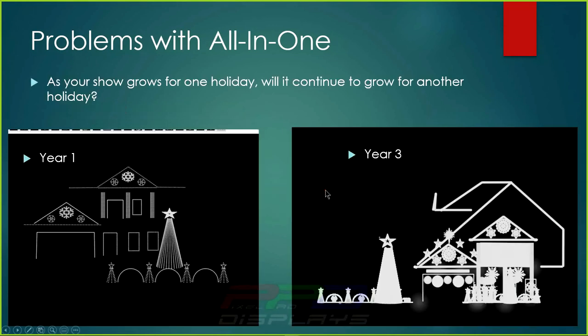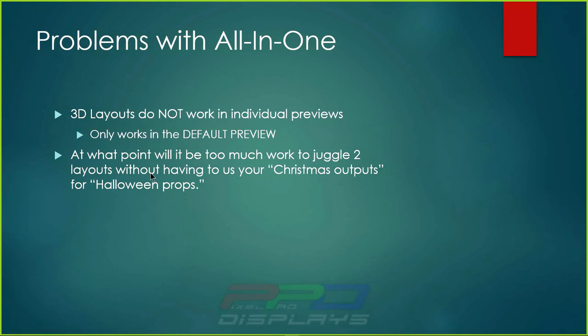As your Halloween and Christmas shows grow, the more complex this becomes. In one example shown here, year one is on the left, and three years into the show on the right, the display has grown to probably 40,000 to 50,000 pixels. When your Christmas show looks like that and your Halloween show is also large, you have more controllers you're just throwing off to the side — that's the problem with an all-in-one show folder sharing Halloween and Christmas layouts.